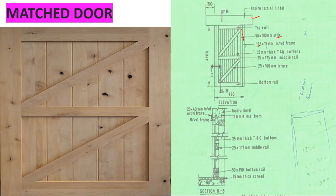And then we have a frame, 125 by 75 millimeters frame, that one there. And then we have 25 millimeter thick T&G battens. And then we have 25 by 100 millimeters brace, this one. That is our elevation.